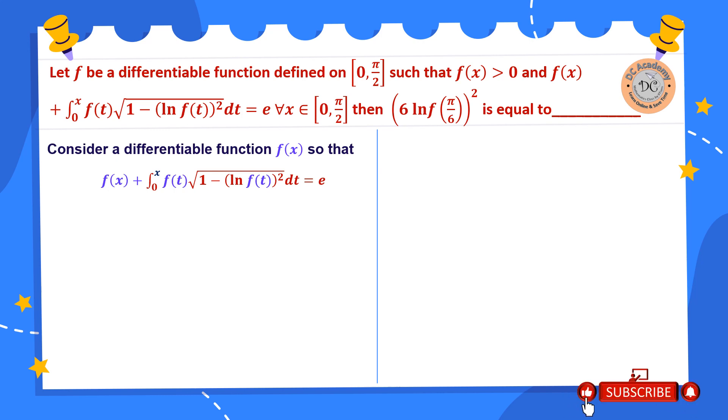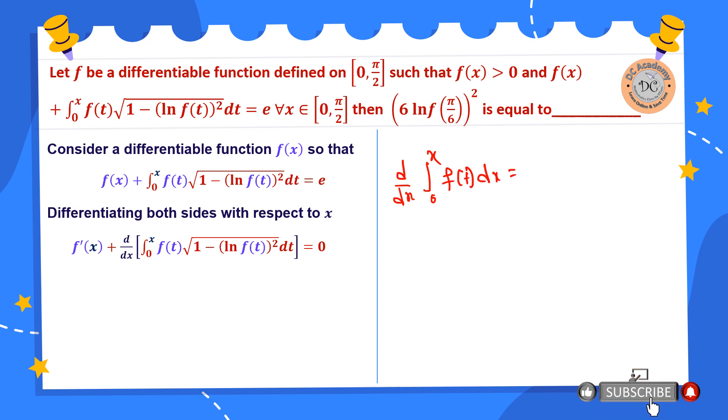That's why we differentiate both sides with respect to x. Therefore the first term will be converted to f'(x) if I differentiate it, and we have the second term under the operator d/dx. Now we know that d/dx of ∫₀ˣ f(t) dt will be equal to always f(x).